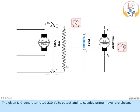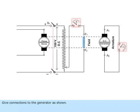The given DC generator rated 230 volts output and its coupled prime mover are shown. Give connections to the generator as shown.